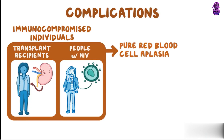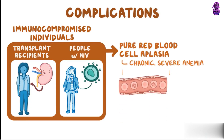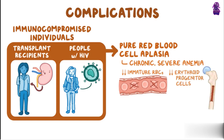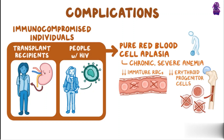This is a form of chronic, severe anemia where there are very few immature red blood cells in circulation in blood vessels or erythroid progenitor cells in the bone marrow. Symptoms of pure red blood cell aplasia are similar to other forms of anemia, like lethargy and malaise.